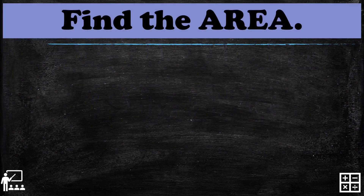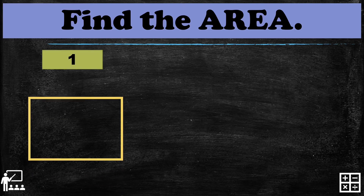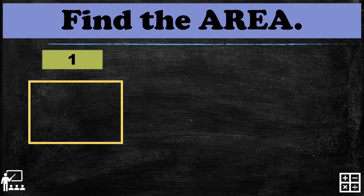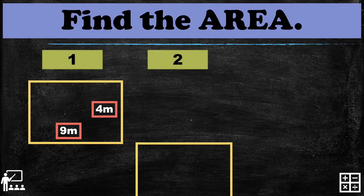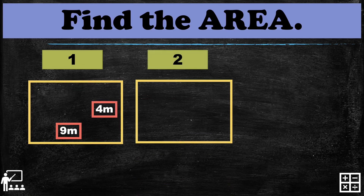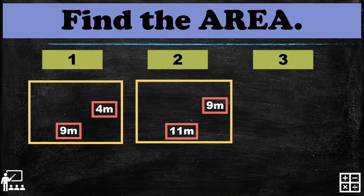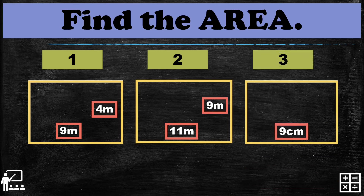Now get ready for your activity time! Find the area of each rectangle. The first rectangle measures nine meters in length and four meters in width. The second rectangle has eleven meters length and nine meters width. The last rectangle has a measurement of nine centimeters.